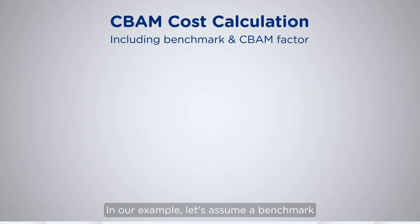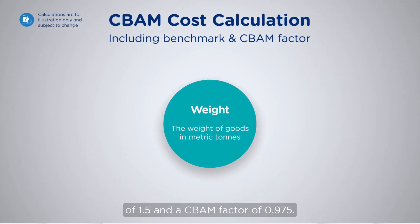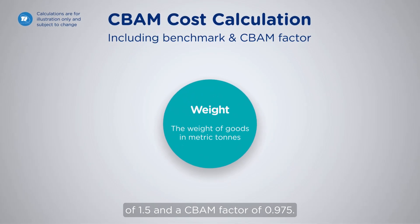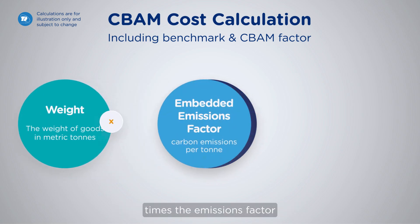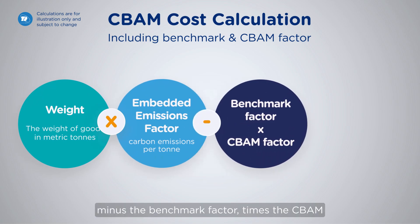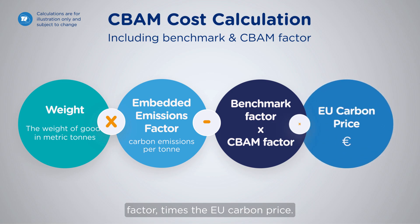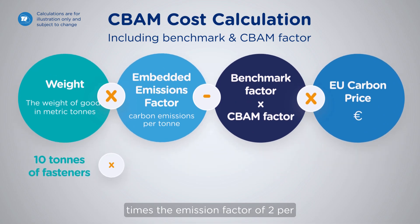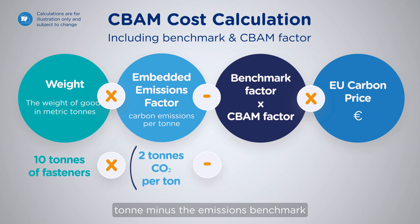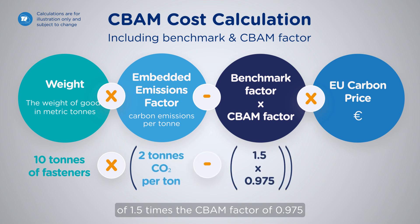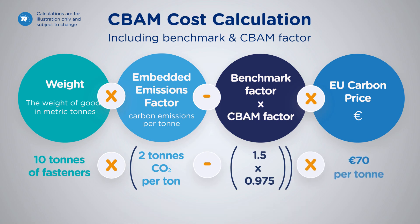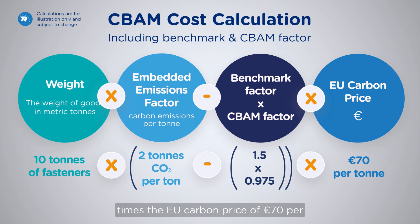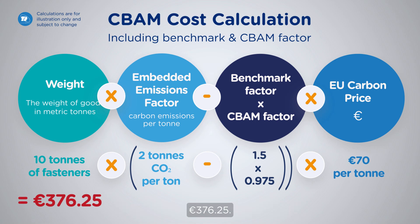In our example, let's assume a benchmark of 1.5 and a CBAM factor of 0.975. The updated formula becomes: weight × (emissions factor − benchmark factor) × CBAM factor × EU carbon price. For example, 10 tons of fasteners × (2 − 1.5) × 0.975 × 70 euros per ton results in a CBAM cost of 376 euros and 25 cents.